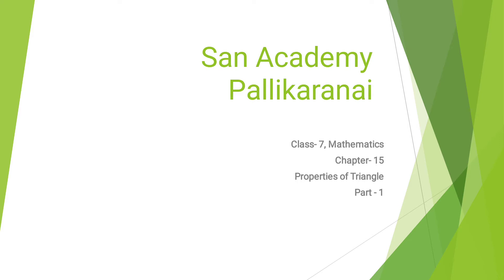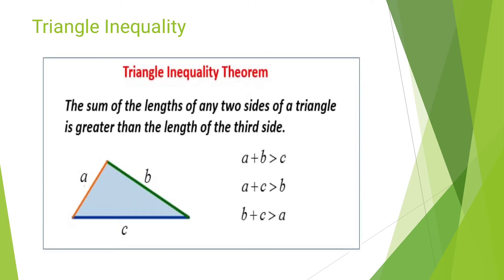Welcome to San Academy Pallikarni. This is Class 7 Mathematics, Chapter 4. We are going to see the property of triangles — Part 1. This is the Triangle Inequality Theorem. The sum of the length of any two sides of a triangle is greater than the length of the third side.